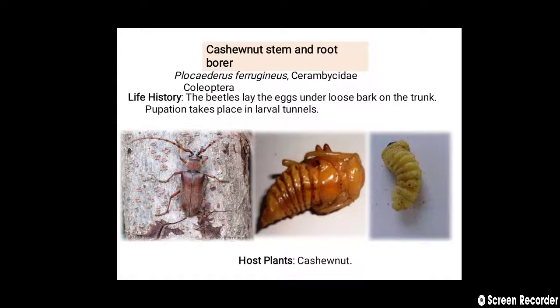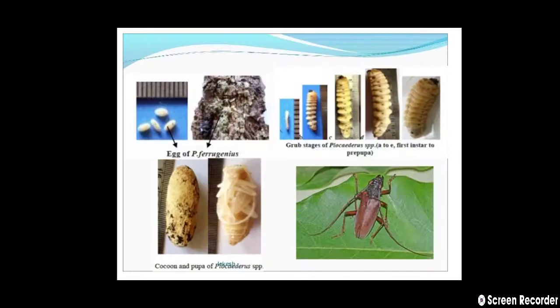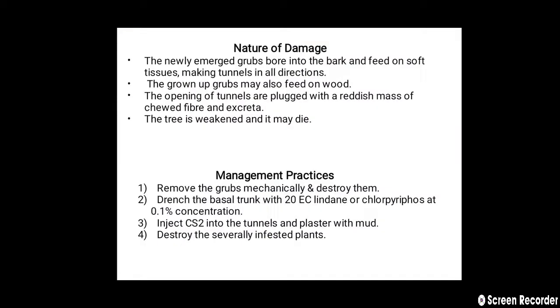Here we can see the different life stages of the cashew nut stem and root borer — the adult, pupa, and larva. The host plant is only cashew nut. We can also see the egg and the cocoon or pupa of the cashew nut stem and root borer.